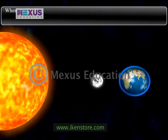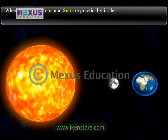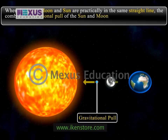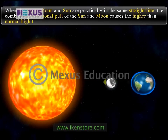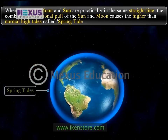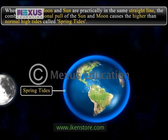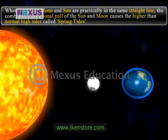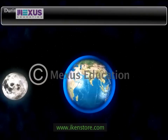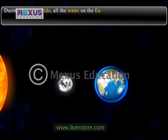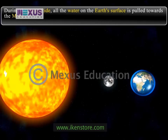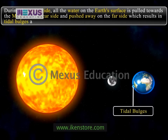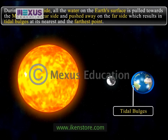When the earth, moon and the sun are practically in the same straight line, the combined gravitational pull of the sun and moon causes higher than normal high tides, called spring tides. Spring tides occur on full moon and new moon days, which means that these tides occur twice a month. During the spring tide, all the water on the earth's surface is pulled towards the moon on the near side and pushed away on the far side, resulting in tidal bulges at the nearest and farthest points.